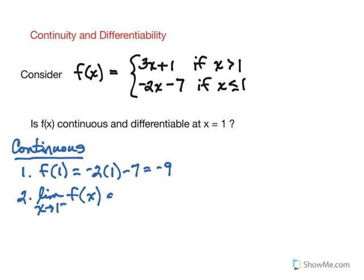If we're approaching one from the left, that means through values less than one, that's the second piece that applies. In this case we're simply going to get the same thing that we had for the function value.